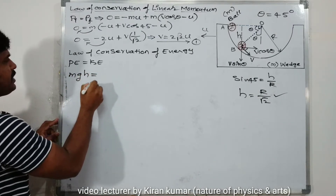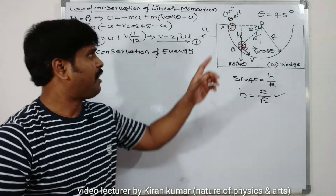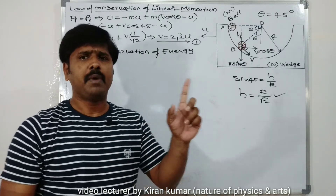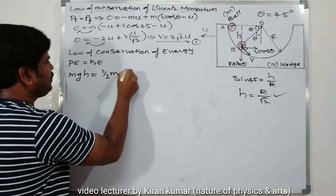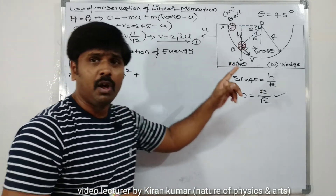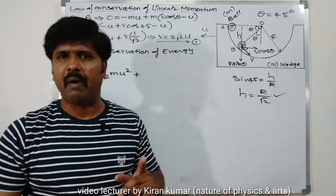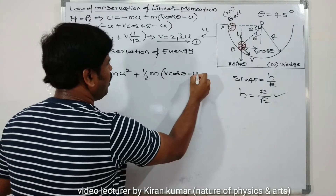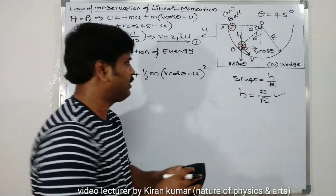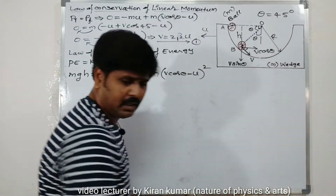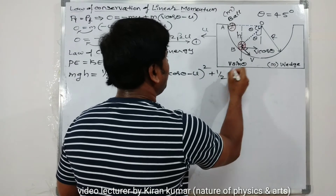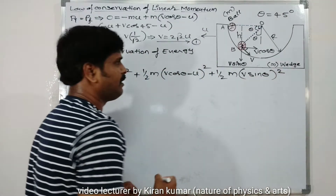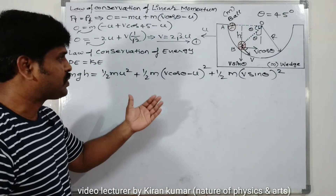Using conservation of energy: mgh equals the kinetic energy of the wedge plus the kinetic energy of the ball. The wedge KE is ½·m·u². The ball has two-dimensional motion, so its KE includes both components: ½·m·(v cos θ − u)² for the horizontal component, plus ½·m·(v sin θ)² for the vertical component.